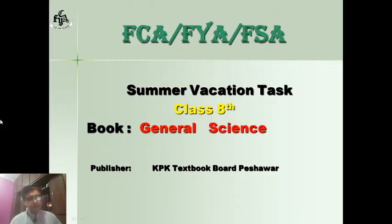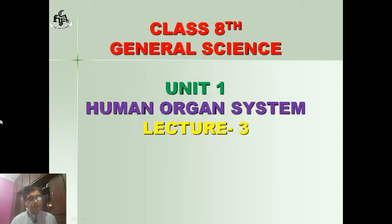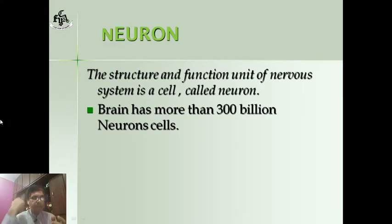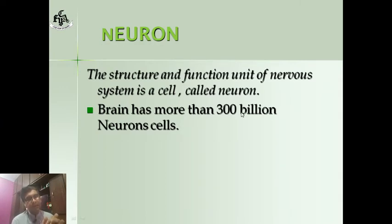Bismillahirrahmanirrahim. This is the third lecture of unit number one. In this lecture we will study about the neuron. The neuron is the structure and function unit of the nervous system — the brain and the spinal cord. It is composed of cells, and these cells are called neurons. According to an estimation, almost 3 billion neurons are present in the brain.